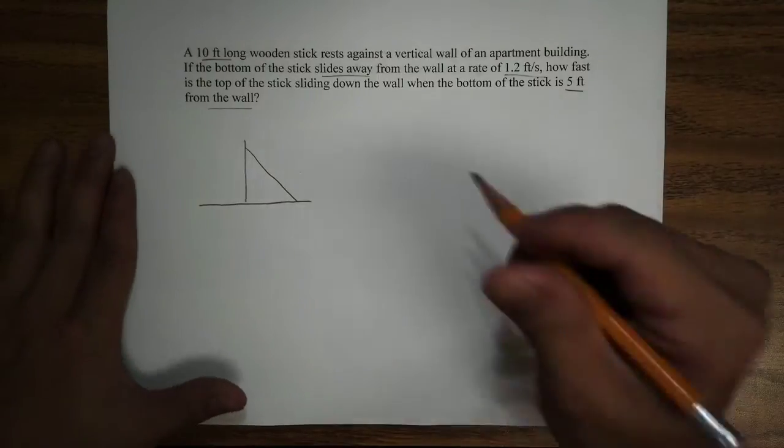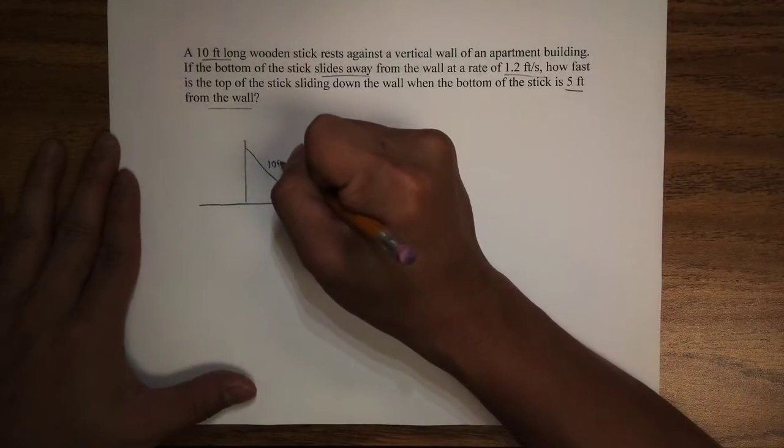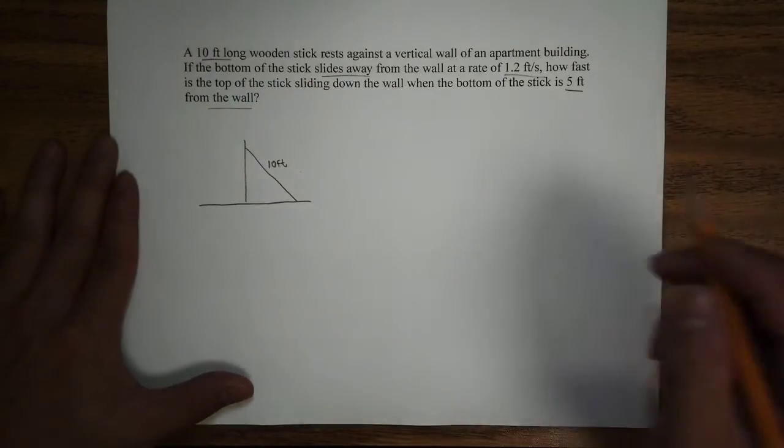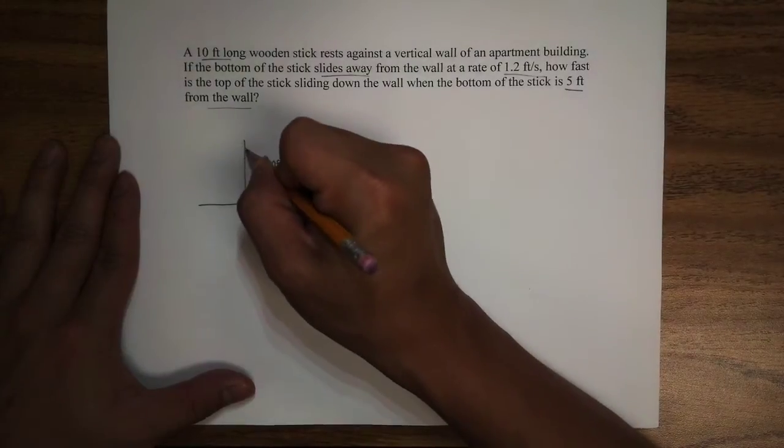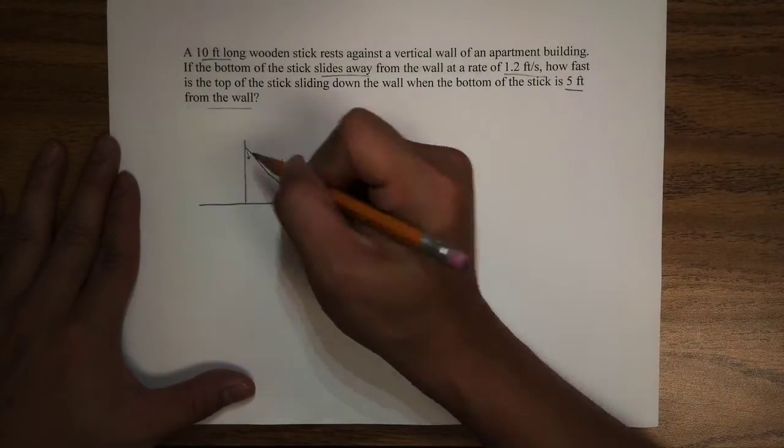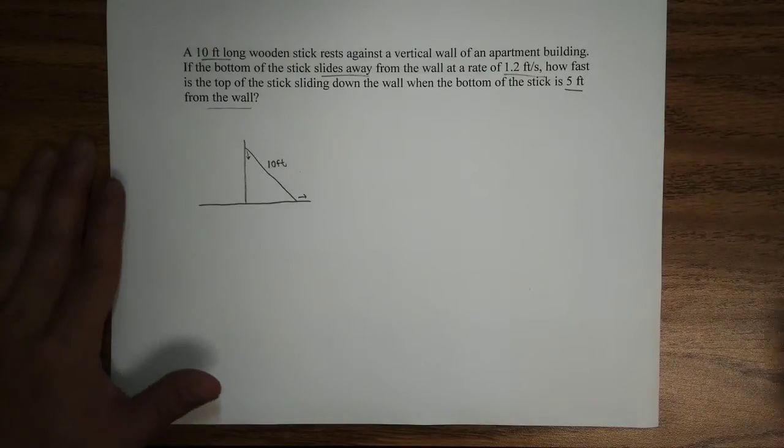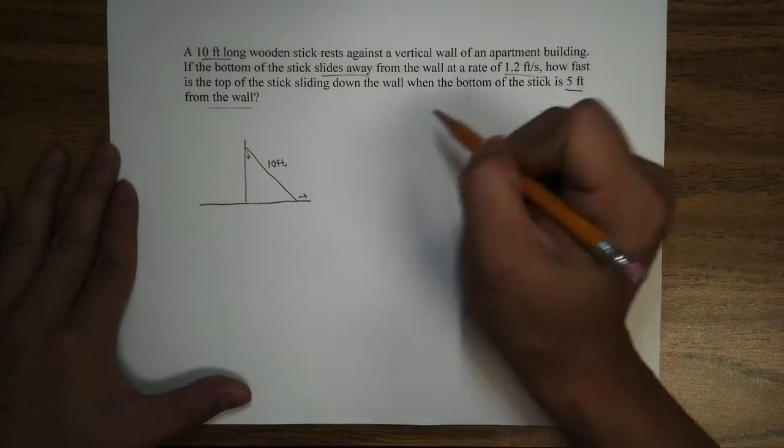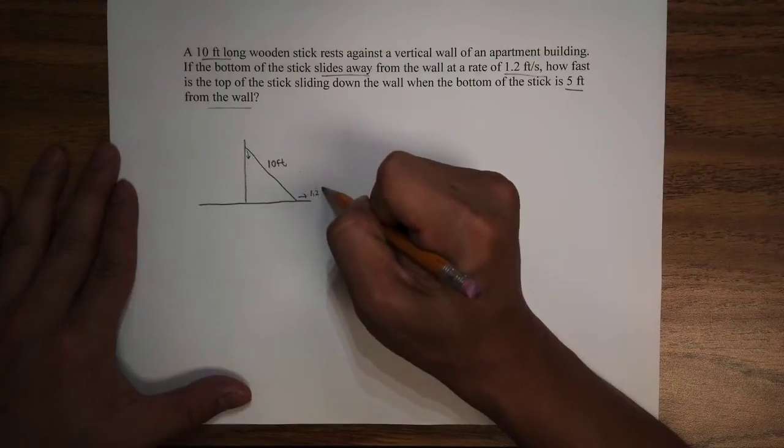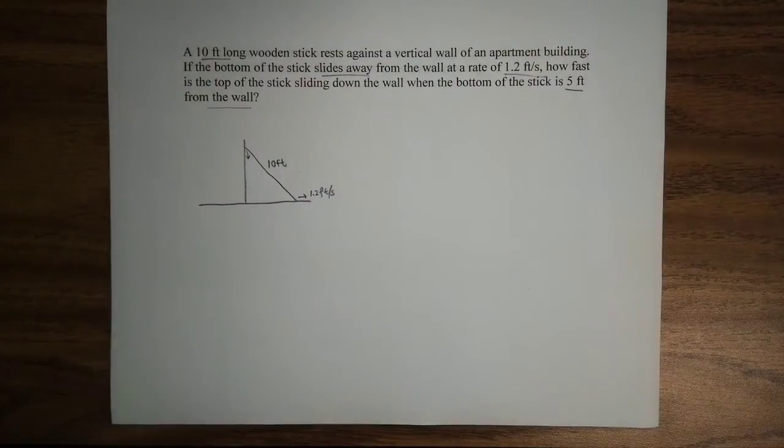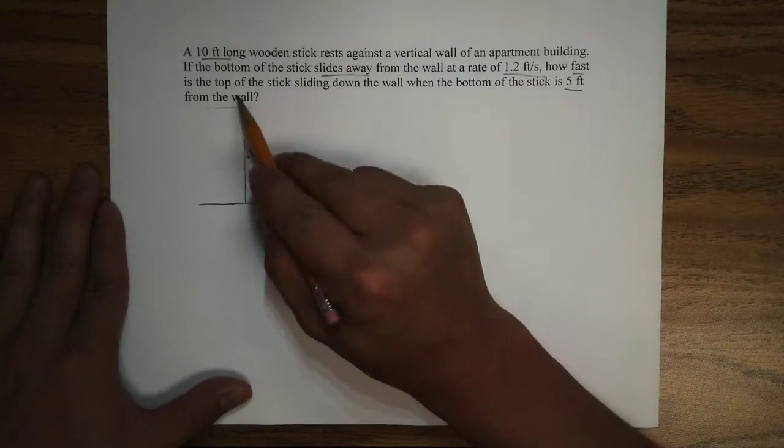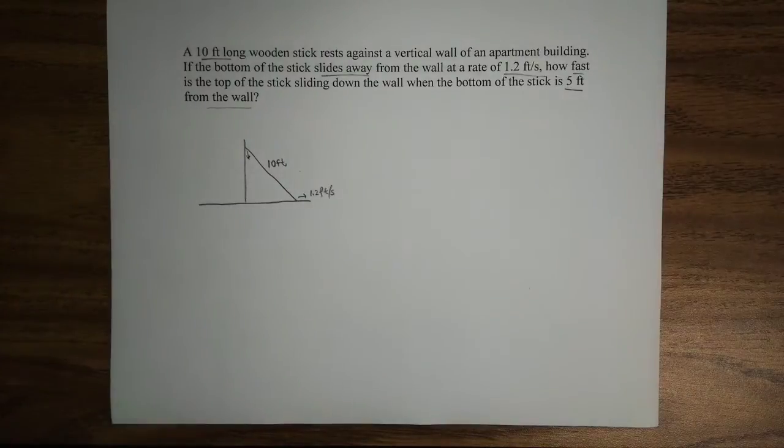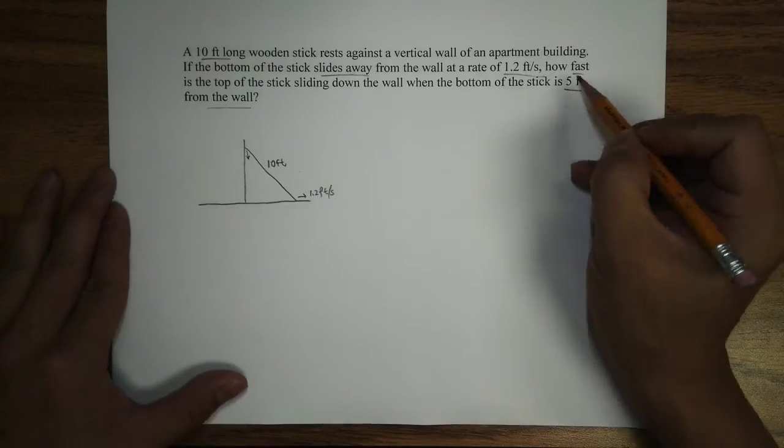And this wooden stick is 10 feet, and this wooden stick is sliding away from the wall, and as it slides, this is going to drop down as well. Now the question states that it is sliding away at the rate of 1.2 feet per second. And it's asking how fast is the top of the stick right here dropping, sliding down the wall when the bottom of the stick is 5 feet from the wall.